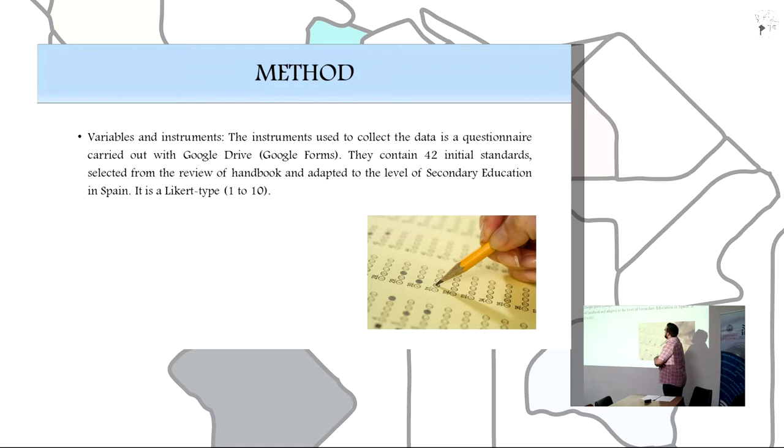About the variables and instruments, we use to collect the data a questionnaire carried out with Google Drive. They contain 42 initial standards selected from the review of handbooks. The number of handbooks are adapted to the level of secondary education in Spain. It is a Likert type from 1 to 10.